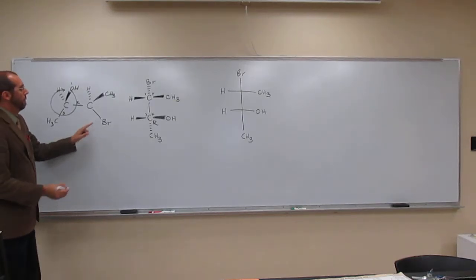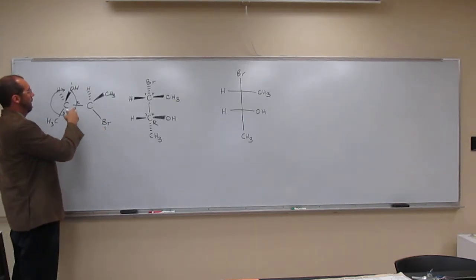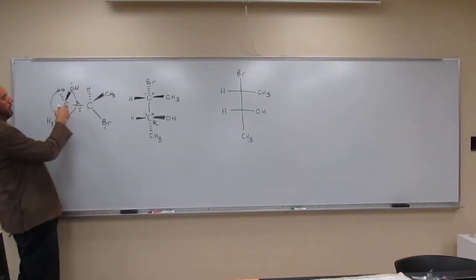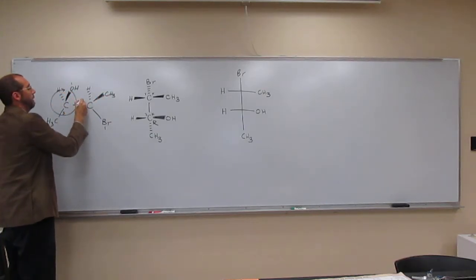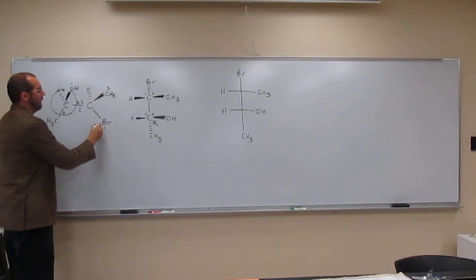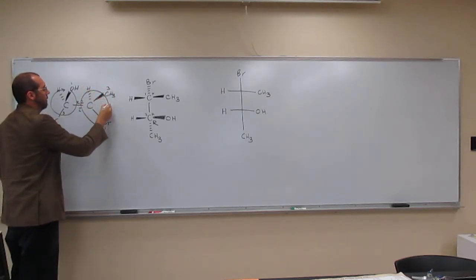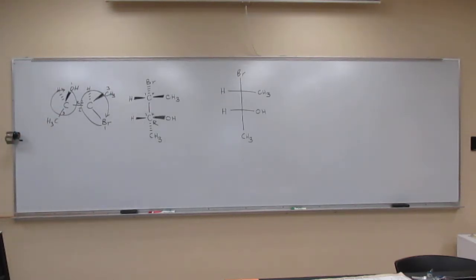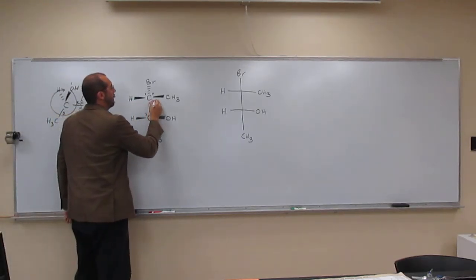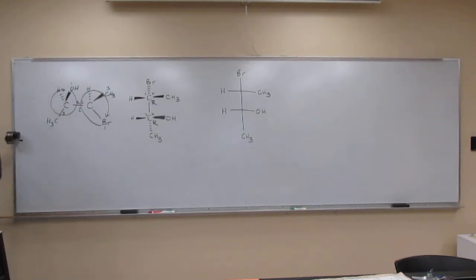So what do we got here? Bromine, one, two, over here, because what's bigger, carbon or carbon, they're the same. What's bigger, oxygen or hydrogen? Oxygen's bigger, so two and three. Four is already in the back. One, two, three, right? So what is that? That's R. Clockwise, right? So it's R. So R, R, okay?